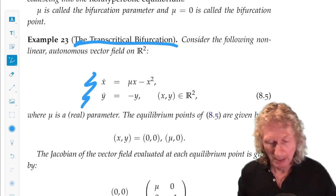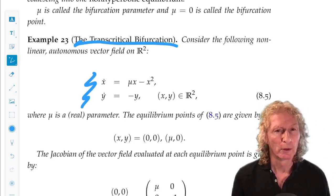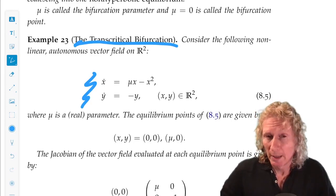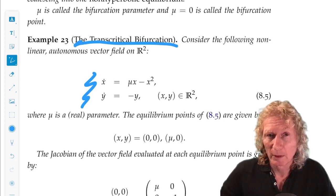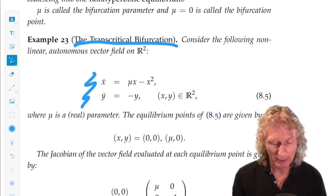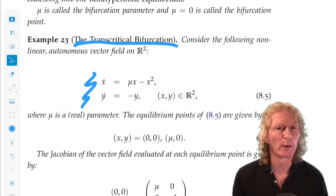We consider this two-dimensional autonomous vector field in the plane. x dot is mu x minus x squared. Remember, saddle node was just mu minus x squared. And y dot equals minus y. Mu is the variable parameter.